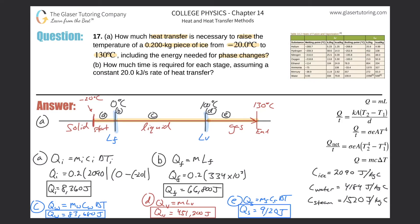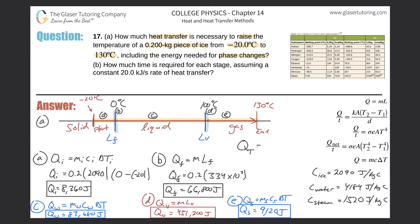To find the overall heat energy gained, we add all five results together: 8,360 + 66,800 + 83,680 + 451,200 + 9,120. The total, q_total, is approximately 619,000 joules.